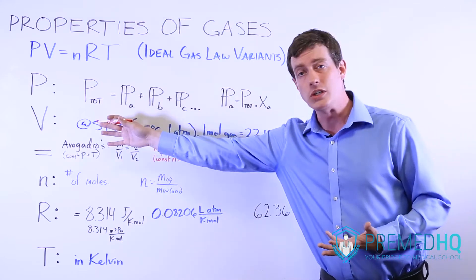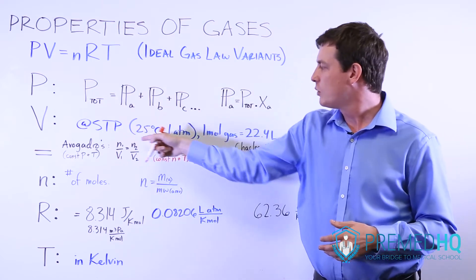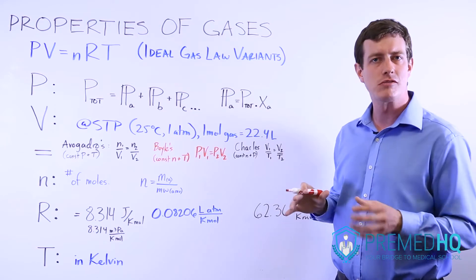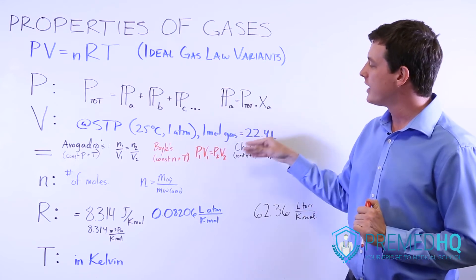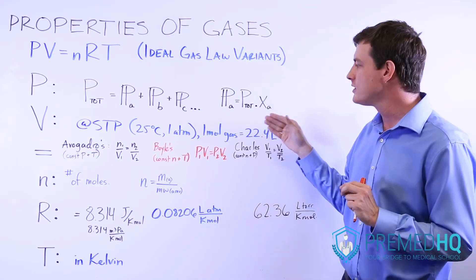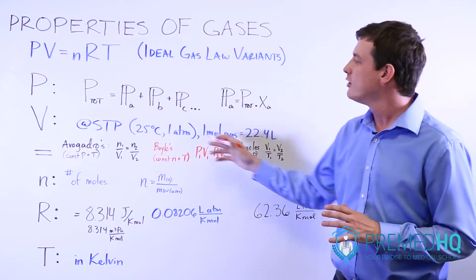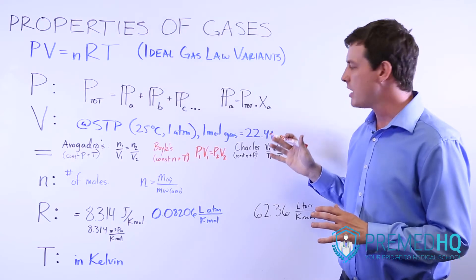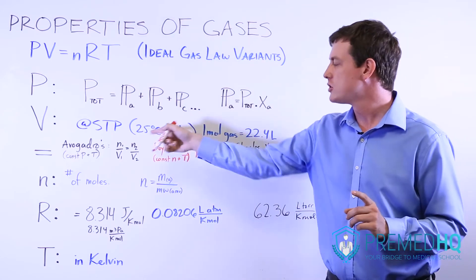Moving on to volume: the main thing to know is that at standard temperature and pressure — meaning 25 degrees Celsius and one atmosphere (or 760 millimeters of mercury) — one mole of gas occupies 22.4 liters. It doesn't matter what type of gas particles are present. As long as you have one mole of gas particles at STP, they will occupy 22.4 liters. This is a number to remember — you may be responsible for recalling it from memory.